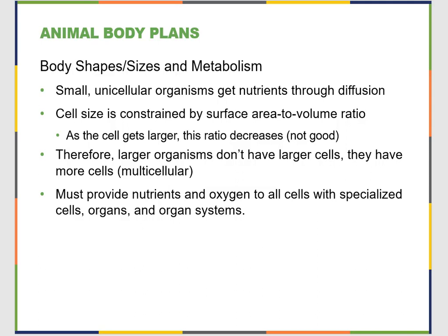For body shapes, sizes, and metabolisms, you have to consider the size of the animal. Small unicellular organisms are perfectly capable of getting everything they need through diffusion — they can take in what they need via diffusion and remove what they don't need via exocytosis. But cell size is really constrained by the area-to-volume ratio, because as the cell gets larger, that ratio really decreases, which means you're capable of getting rid of things and taking in materials a lot more slowly relative to your body size.